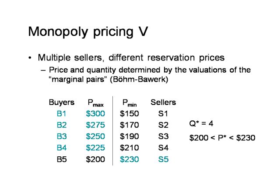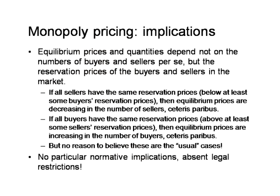The moral of the story is that equilibrium prices and quantities do depend on characteristics of buyers and sellers in the markets — no doubt about it. But it's not simply the numbers of buyers and sellers that matter. It's the entire schedule of valuations on both the buyer and seller sides — the reservation prices — that matter. We kept buyers' reservation prices the same and varied the number of sellers and their reservation price levels, and saw that equilibrium prices are decreasing in the number of sellers, other things equal.